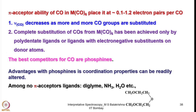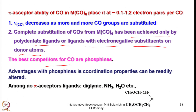The pi acceptor ability of CO in M(CO)₆ places it at 0.1 to 1.2 electron pairs per CO taken into the pi star orbitals. As more CO groups are substituted, fewer remain to accommodate metal pi electron density, so stretching frequency decreases. Complete substitution of CO from M(CO)₆ has been achieved only by polydentate ligands or ligands with electronegative substituents having empty pi orbitals. The best competitors for CO are phosphines, with pi acceptor ability decreasing in the order PF₃ > PPh₃ > PMe₃.